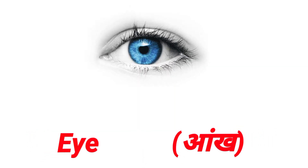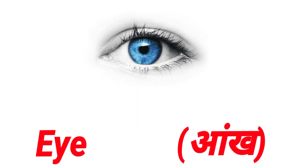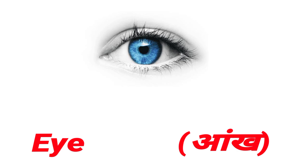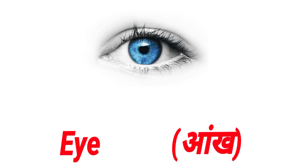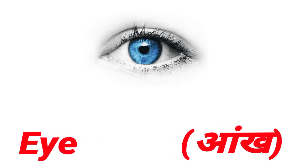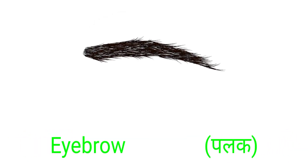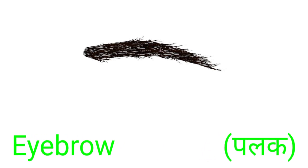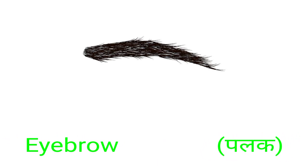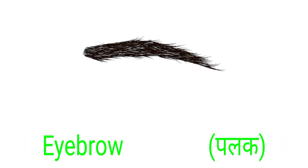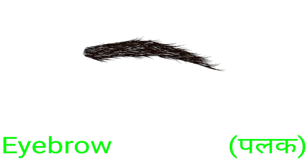Eye. This is my Eye. Eye means Aak. Eyebrow. This is my Eyebrow. Eyebrow means Palette.